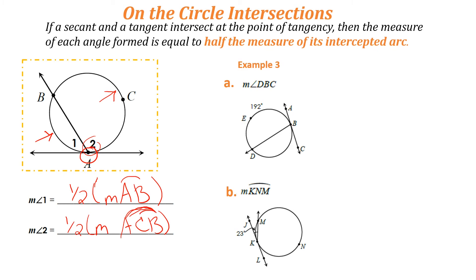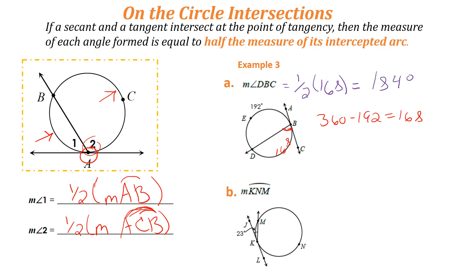In example 3, we want to find the measure of angle DBC. Remember, there are 360 degrees in a circle, so 360 minus 192 is 168 — that's the intercepted arc. The measure of angle DBC equals one-half of 168, which is 84 degrees.